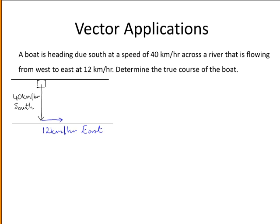We are asked to determine the true course of the boat. Now looking at these two vectors you should be able to see where the true course of the boat is. So using the triangle law to add the black vector and the blue vector results in this vector here, which is the true course of the boat.